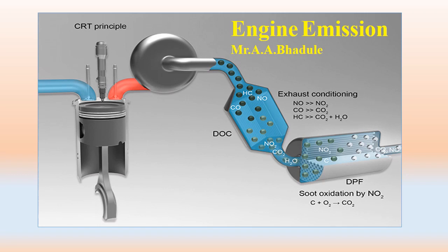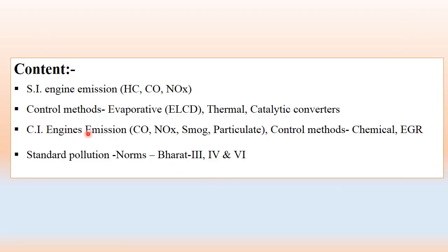Hello friends, welcome to lecture number 4 for chapter number 8, Alternative Fuels and Exhaust Emissions. In the previous 3 lectures, we discussed alternative fuels and their requirements, as well as the suitability of alternative fuels for SI engines and CI engines, and the emissions or pollutants emitted from SI and CI engines. Now in today's lecture, we are going to study the different controlling methods for SI engine emissions as well as CI engine emissions.